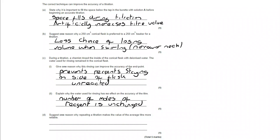Suggest one reason why repeating a titration makes the value of the average titer more reliable. So in this case, we are looking for the fact that if we do it as an individual titer, that titer might well be anomalous. We can also look at it that we're checking for concordancy. If I get two values within 0.10 cm³ of each other, I can be pretty confident that they are close to the true value.